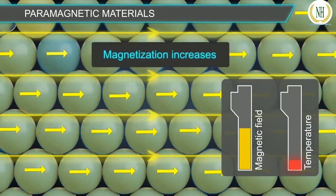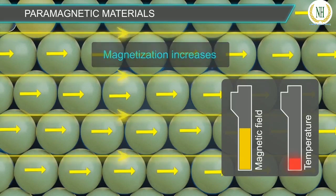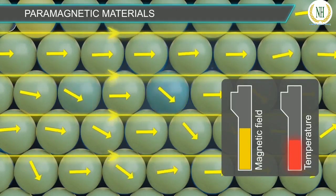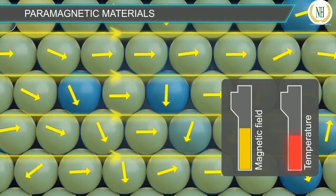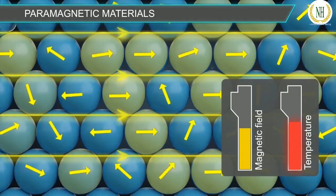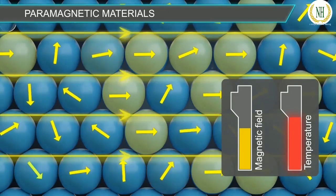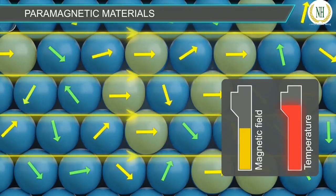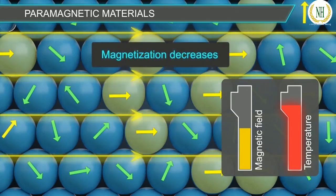If the temperature is increased, the thermal energy of the material increases. Some of the dipoles that were already aligned experience higher thermal energy and become randomly oriented, so the magnetization decreases.